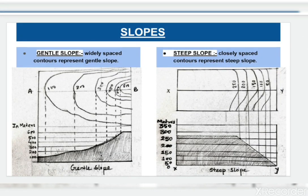Let us discuss the next topic, that is slopes. There are generally four types of slopes we see in the topographical sheet. These are: gentle slope, steep slope, convex slope, and concave slope.